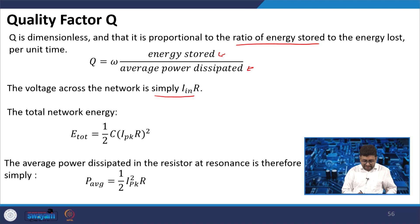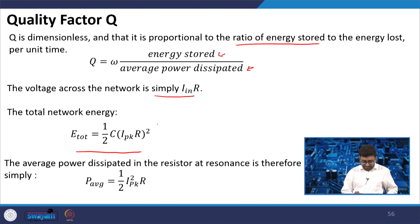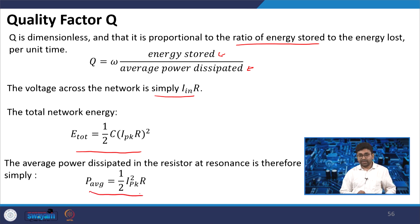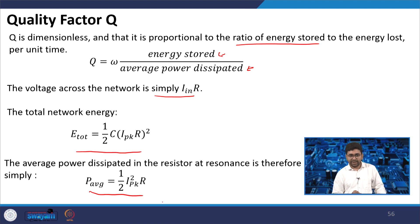Your total network energy is ½CV². You can write ½CV where V = Ipeak × R. So that is Ipeak² × R. Your average power dissipated in the resistor at resonance is ½ × Ipeak² × R — taking the half for average power.